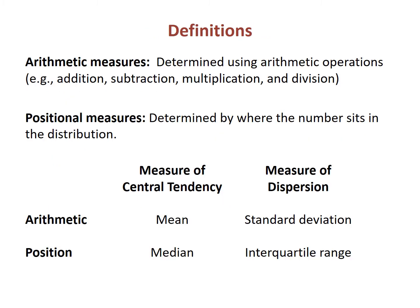Arithmetic measures are determined by using basic arithmetic: addition, subtraction, multiplication, and division. In contrast, positional measures are determined by where the number sits in the distribution. Each type of measure has its own measure of central tendency and measure of dispersion.